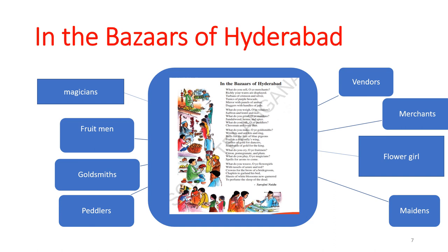Look at the concept map of the poem 'In the Bazaars of Hyderabad.' Centrally, I kept the poem, and different people involved in the poem I kept around it. What are the materials do they sell? Write in your notebook. Vendors, merchants, flower girl, maidens, magicians, fruitmen, goldsmiths, peddlers — what do they sell? Goldsmiths — what do they sell, what kind of ornaments do they make? Fruitmen — what fruits do they sell? Magicians — what do they do? Write all these activities in your notebook.